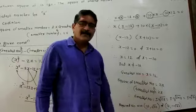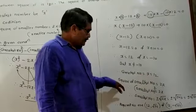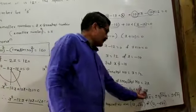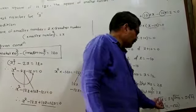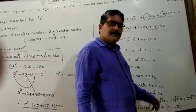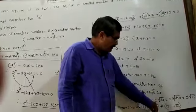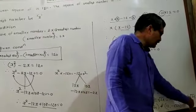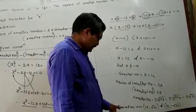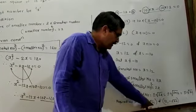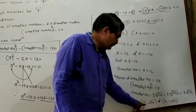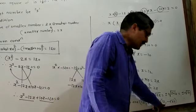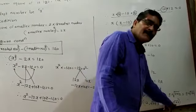So the greatest number is x equals 12. Now find the smallest number. The square of the smallest number is given as 2x, so smallest number squared equals 2 times 12 equals 24. Therefore the smallest number equals plus or minus the square root of 24. So the greatest number is 12 and the smallest number is plus square root of 24, or for the second condition, minus square root of 24.